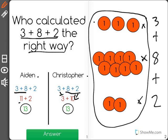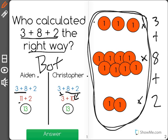As you can see, it doesn't matter where you start because they're all part of the same group, meaning that both Aiden and Christopher calculated 3 plus 8 plus 2 the right way.